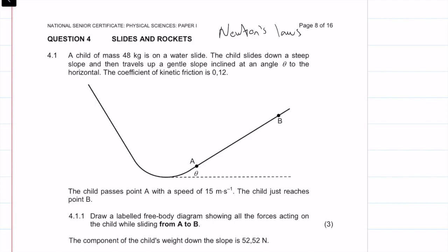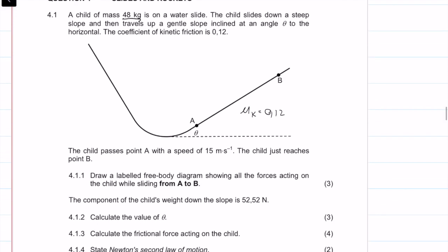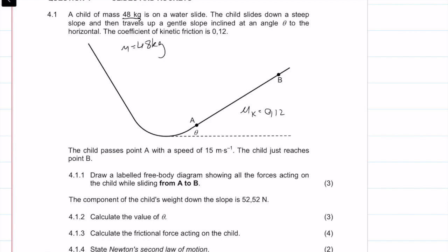Question 4.1: a child of mass 48 kilograms is on a water slide. The child slides down a steep slope and then travels up a gentle slope inclined at angle theta to the horizontal. The coefficient of kinetic friction is 0.12, so mu_k = 0.12, and mass = 48 kg. The child passes point A with a speed of 15 m/s, and just reaches point B, so velocity at B equals zero.